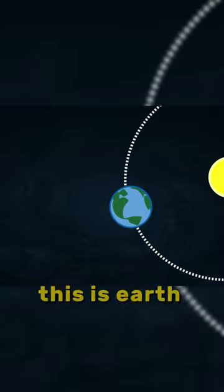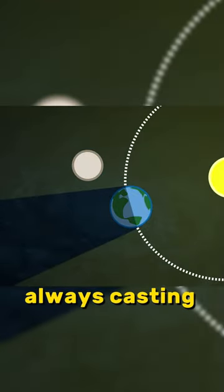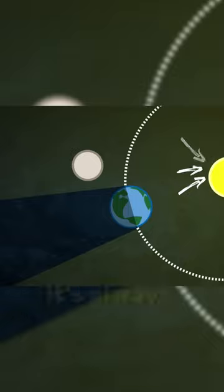For example, lunar eclipses. This is Earth, and the moon is over here. The sun is always casting Earth's shadow into space. It's always there no matter what.